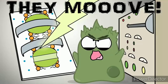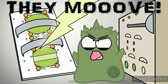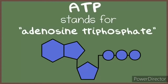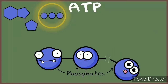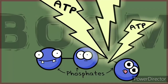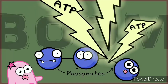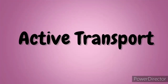Movement of molecules from low to high concentration takes energy because that's against the flow. Typically, it requires ATP energy. ATP, adenosine triphosphate, has three phosphates, and when the bond for the last phosphate is broken, it releases a great amount of energy. ATP is a pretty awesome little molecule. ATP can power active transport to force molecules to go against their concentration gradient.